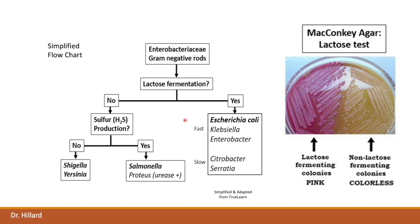In non-lactose fermenting colonies, the production of hydrogen sulfide gas by the organism can help distinguish Salmonella from non-Salmonella-producing bacteria such as Shigella and Yersinia enterocolitica. Of course, there are many biochemical tests other than these that are used to distinguish the Enterobacteriaceae bacteria from each other, but as far as the enteric gastrointestinal disease-causing Enterobacteriaceae, these tests are key.